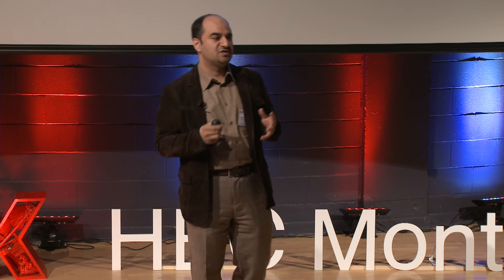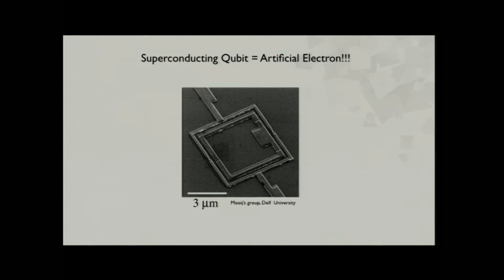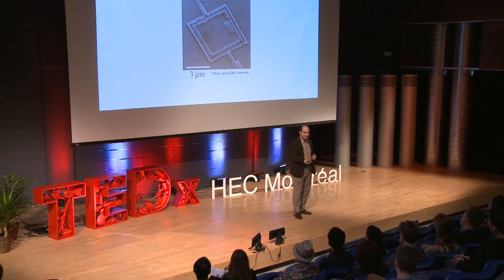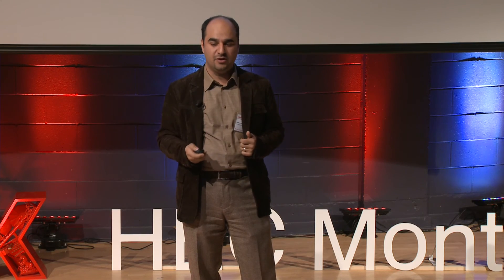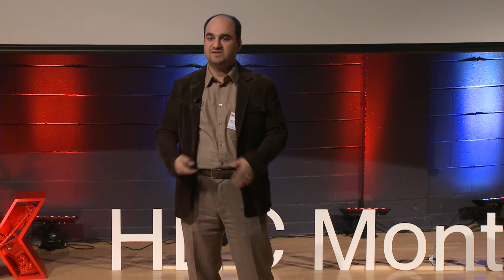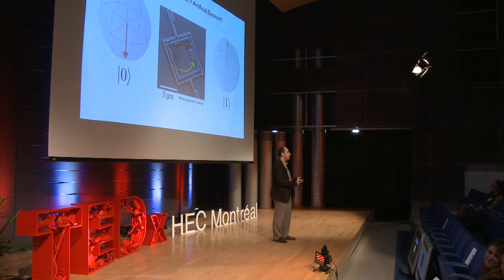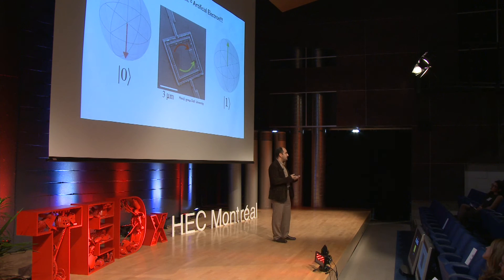Look at this system — a real qubit made from superconductors. Look at the inner ring. Without a voltage source, we can have an electrical current going through it. If the current circulates counterclockwise, we associate it with spin-up, or state 1. If it circulates clockwise, it can be in state 0. That's how you can make an artificial electron — not a real electron, but a circuit that mimics electronic behavior. It has quantum effects; you can put it in superposition, with both 1 and 0 on top of each other.